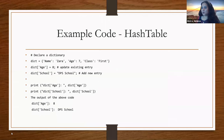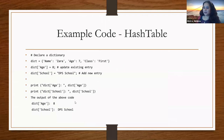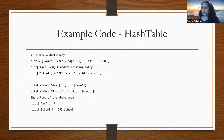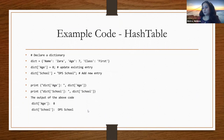Here's a code snippet of a dictionary in Python. This adds a new entry to an existing dictionary called school with a key and the value DPS school. When you try to print that, you get the value we entered. That is all about dictionary.